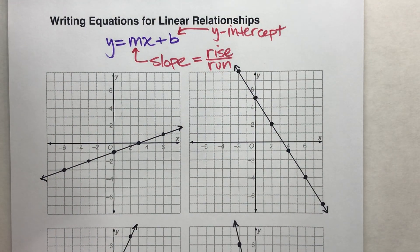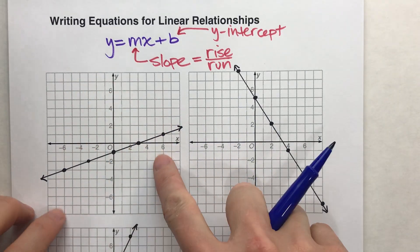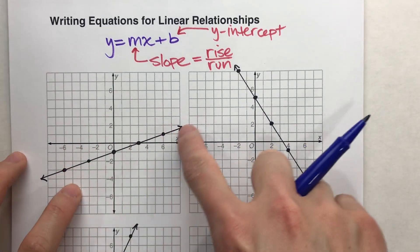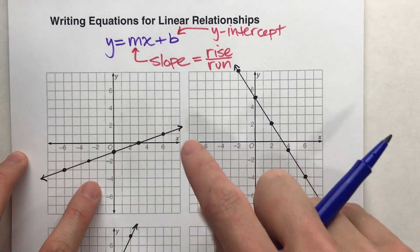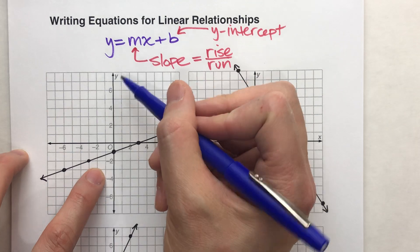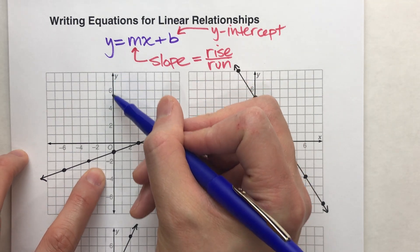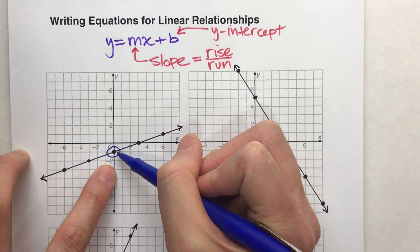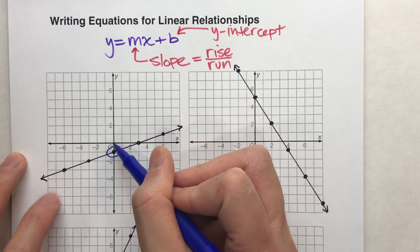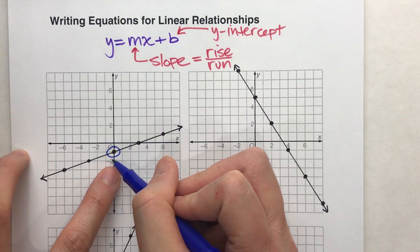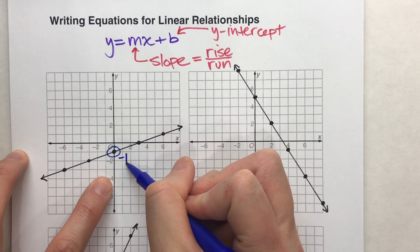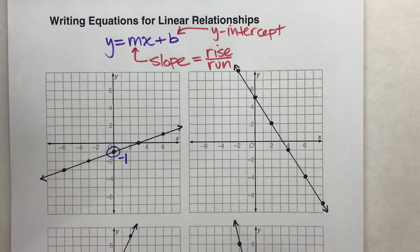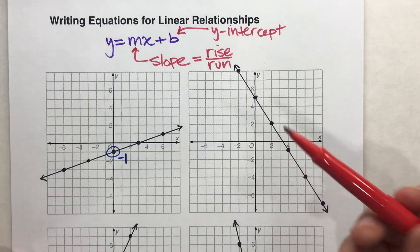So let's do this. On our first example, we've got our line. Let's start by finding the y-intercept. Here's my y-axis. This line crosses the y-axis here — here's 0, here's negative 2 — so my y-intercept is negative 1. First step done.